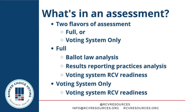So what's in an assessment? There are two flavors of assessment. There are full assessments, which make up 33 of the assessments we've written, and there are voting system only assessments — there are 18 of those. To be perfectly frank, we wound up splitting things up this way because we had been working on this project for so long that we weren't making enough progress quickly enough to make a full assessment for every state. Once we had gotten to 33 assessments, we said we need to actually get this project done. Let's do voting system only assessments for the other 18 states we had left.